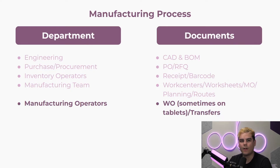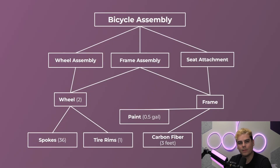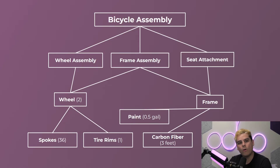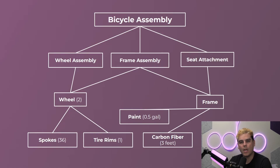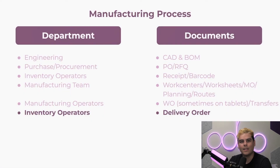Within a manufacturing order are work orders — the operational steps a product goes through during production. Using our bike example, these might include operations like wheel assembly, frame assembly, and seat attachment. While the MO outlines and secures all components needed through the BOM, the work orders consume those components in a logical order. Work orders often include worksheets, which are detailed instructions for the assembly line.